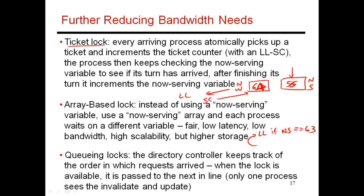Finally, when that becomes 63, this thread realizes it is now its turn to acquire the lock and moves ahead. In terms of coherence traffic, this is no better than the previous implementation because everyone is examining a single variable, and every time that variable is changed, everyone has to engage in coherence traffic to read the new value. The main difference is that this is a little bit more fair — when you show up, you are guaranteed your turn after a certain amount of time, rather than some thread repeatedly beating you by performing its store-conditional first.